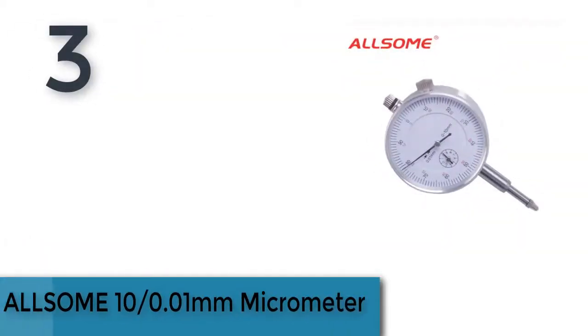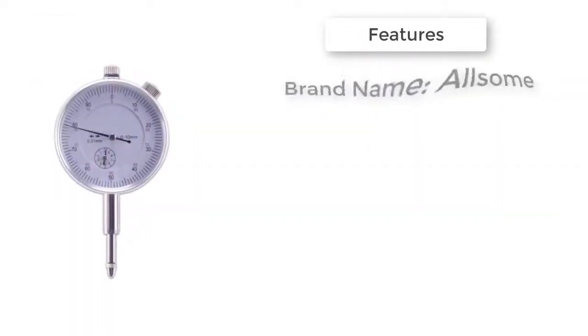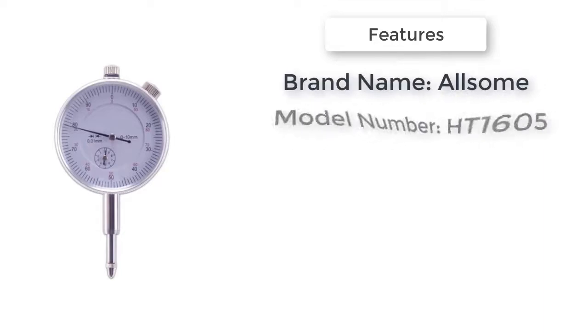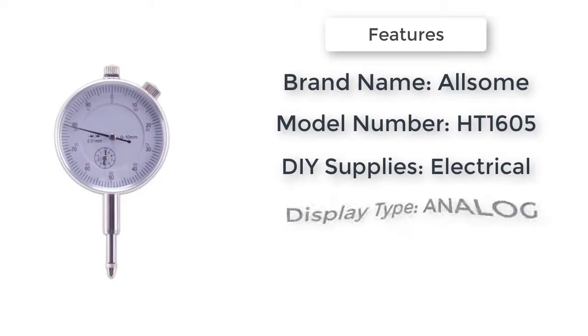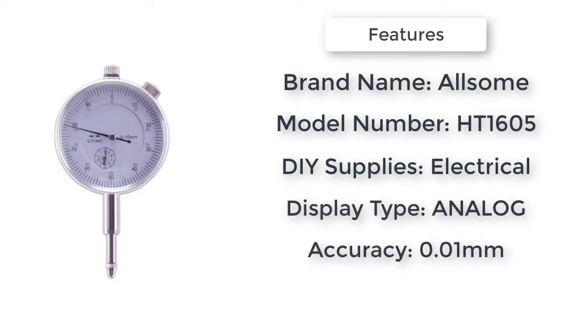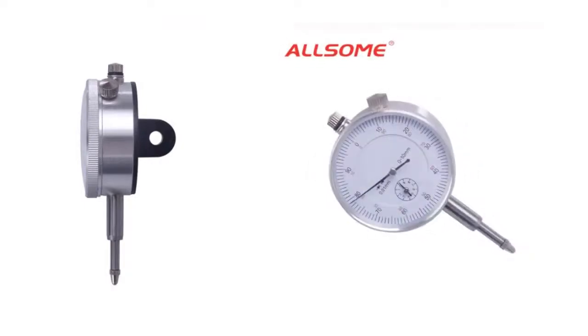The item number 3 is Awesome 10/0.01 millimeters micrometer. Dial indicators are precision measuring tools with a myriad of applications in the machine shop. Contact point made from stainless steel, hard chrome plated stem, precision ground, shop proof construction. High sensitivity, stable and reliable in accuracy.